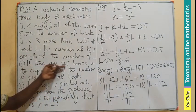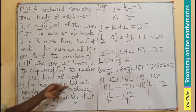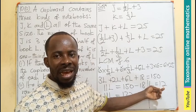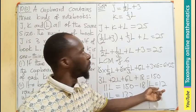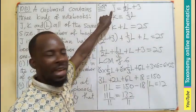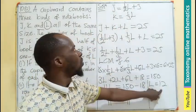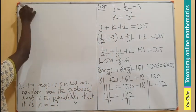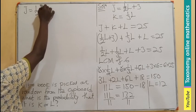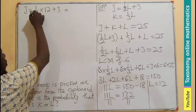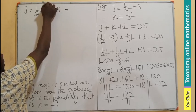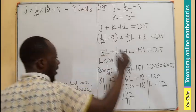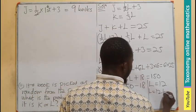Now we substitute L equals 12 back to find J and K. For J: J equals one-half of 12 plus 3, which is 6 plus 3, giving J equals 9 books.